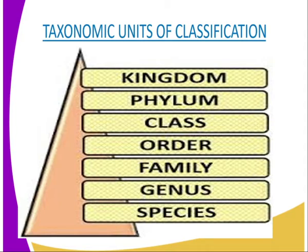Organisms that resemble in nearly all respects belong to the same species. A species is a group of organisms that can freely or naturally interbreed to produce a viable, or rather a fertile, offspring. For example, goats can breed to produce goats because they belong to the same species.